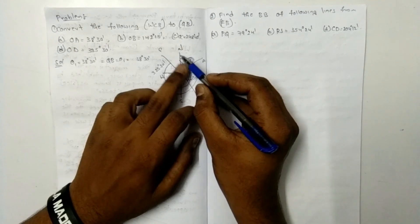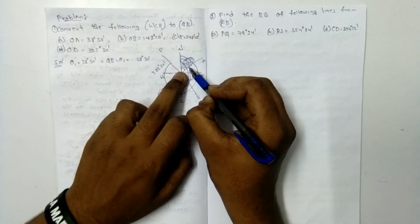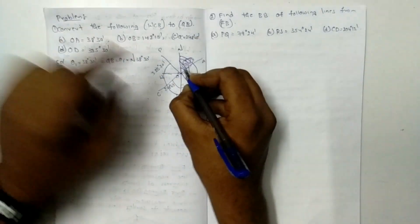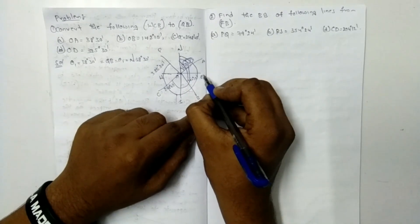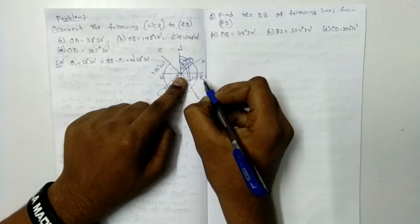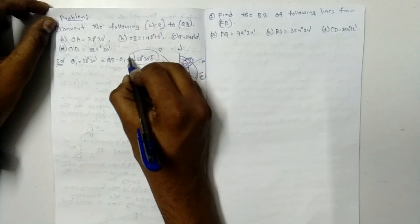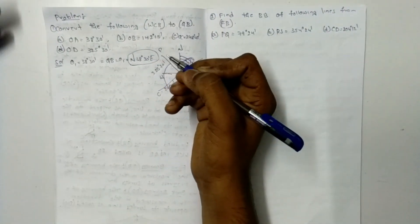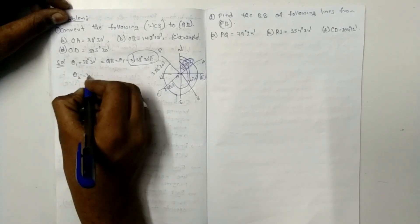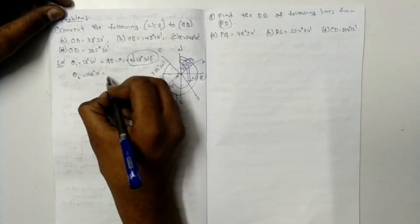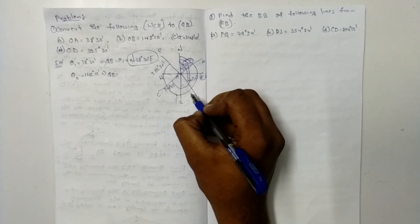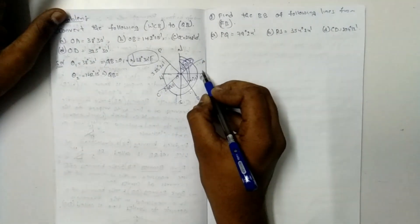The quadrantal bearing of OA is North 38°30' East. Next, OB = 142 degrees 15 minutes. 142 degrees is in the second quadrant, between 90 and 180 degrees, so the bearing is in the south-east direction.